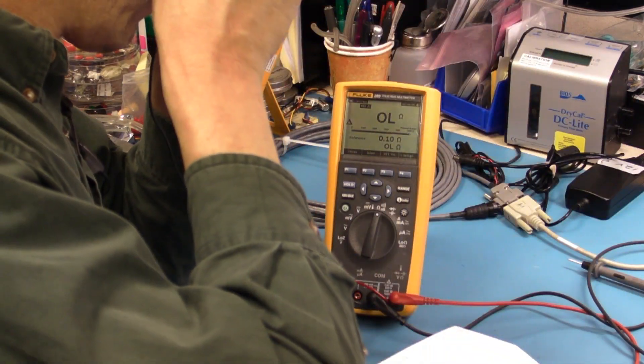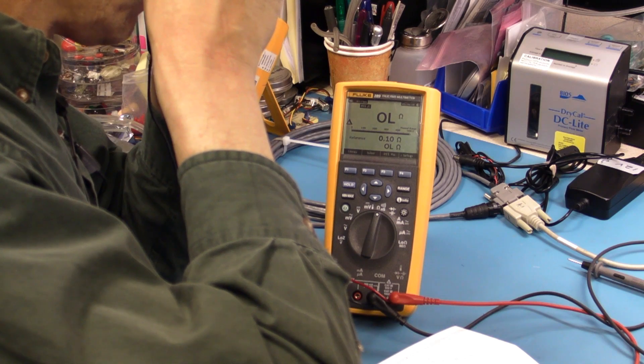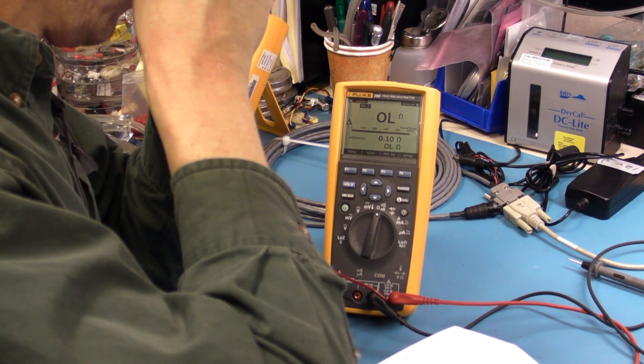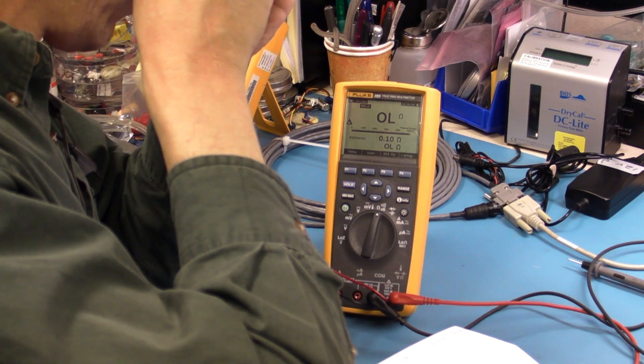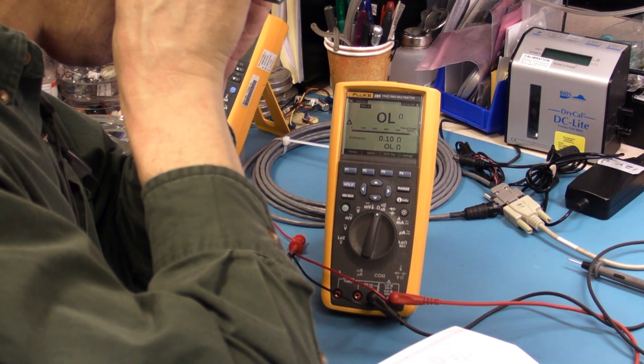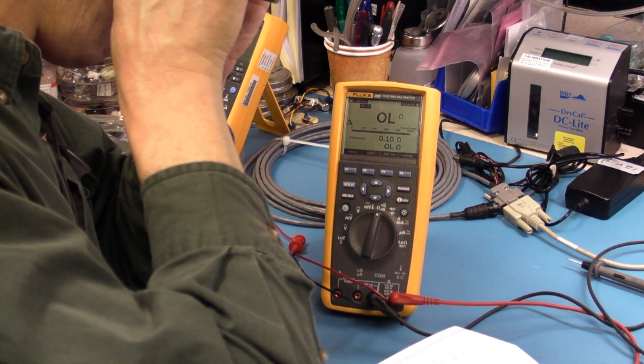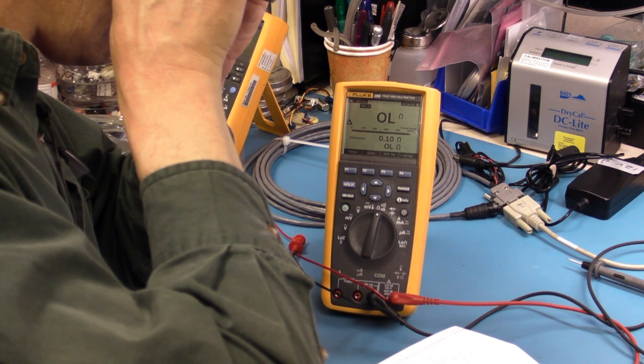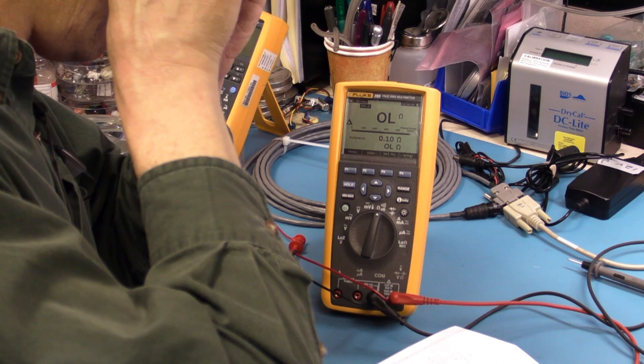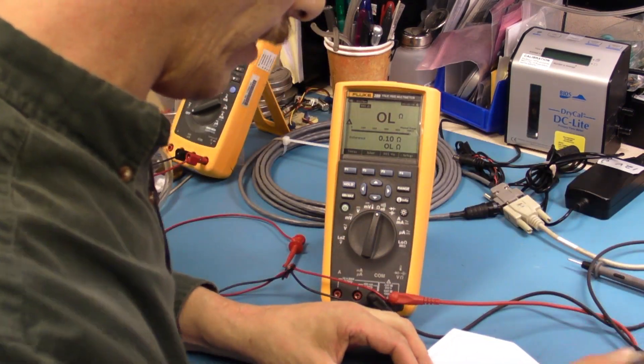But I can actually see a small trace, which shouldn't be there, where they had bad etching. And it's leading from the edge of the VIA over to R43, which happens to actually go to the negative rail.